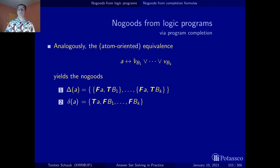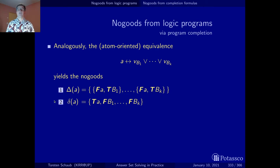You take the equivalence, decompose it into two implications, then do the logical transformation, apply De Morgan's law, and for one implication you get one set of no-goods and for the other you get another. Enjoy doing the translation — it's pretty straightforward.